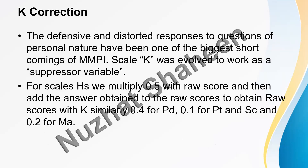MMPI is an objective assessment tool with many items, and sometimes items are of a very personal nature. So people can be defensive and give distorted responses. To address this, K-correction is added — it acts as a suppressor variable.